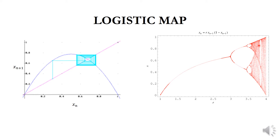At r equal to 3.5, the curve bifurcates again. This bifurcation increases in a nonlinear nature, leading to chaotic behavior. This plot of control parameter versus attractor points is called the logistic map.